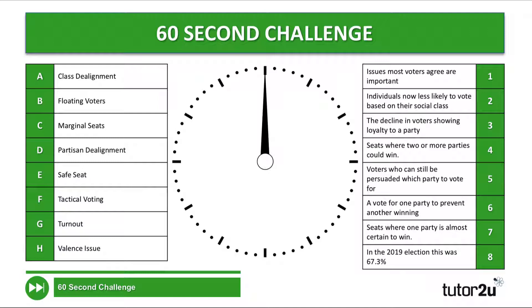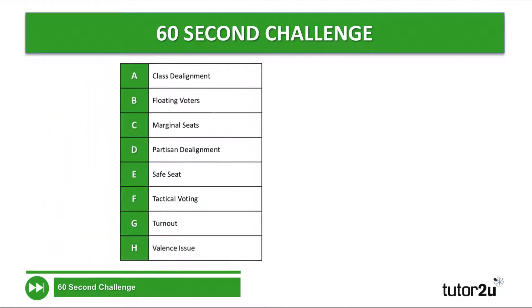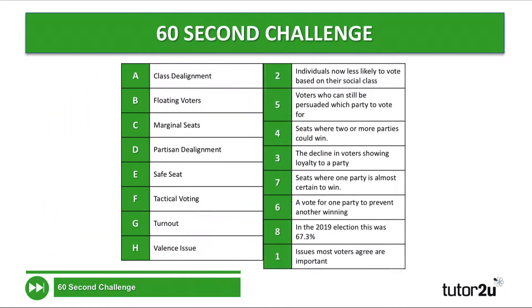That was very dramatic, wasn't it! How did you get on? Okay, I hope you managed to get most of these. Here we go — here are our key terms and here are our brief definitions. Class dealignment: individuals are now less likely to vote based on their social class. The concepts of class dealignment and partisan dealignment are very much linked. Floating voters: voters who can still be persuaded which party to vote for — kind of different from loyal voters or tribal voters.